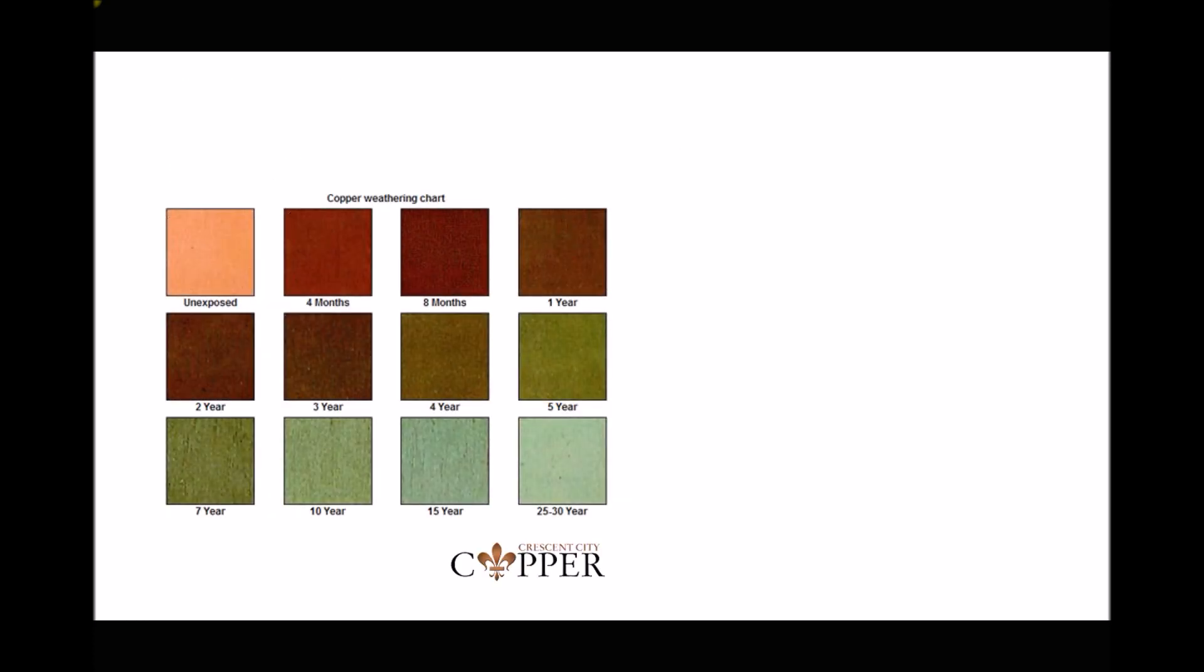As our starting point we're going to look at the oxidation of copper. I have an image on the screen here that I borrowed from Crescent City Copper, which shows how copper weathers over time. In the top left corner we see copper when it hasn't been exposed to any weathering. As we move from left to right we see how the color changes within the first year. On the second row we see changes from two to five years, and on the bottom row we see changes from seven to 25 or more years. We see the copper go through browns to blacks and all the way through to greens.